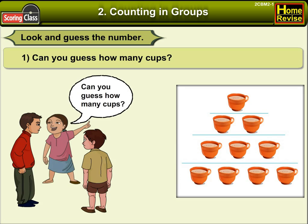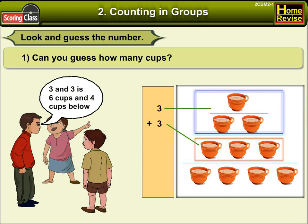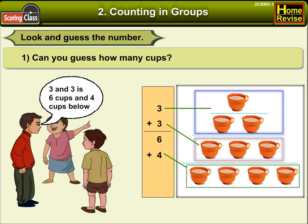Number 1. Can you guess how many cups are there? 3 and 3 is 6. 6 cups and 4 cups below — that should be 10 cups.